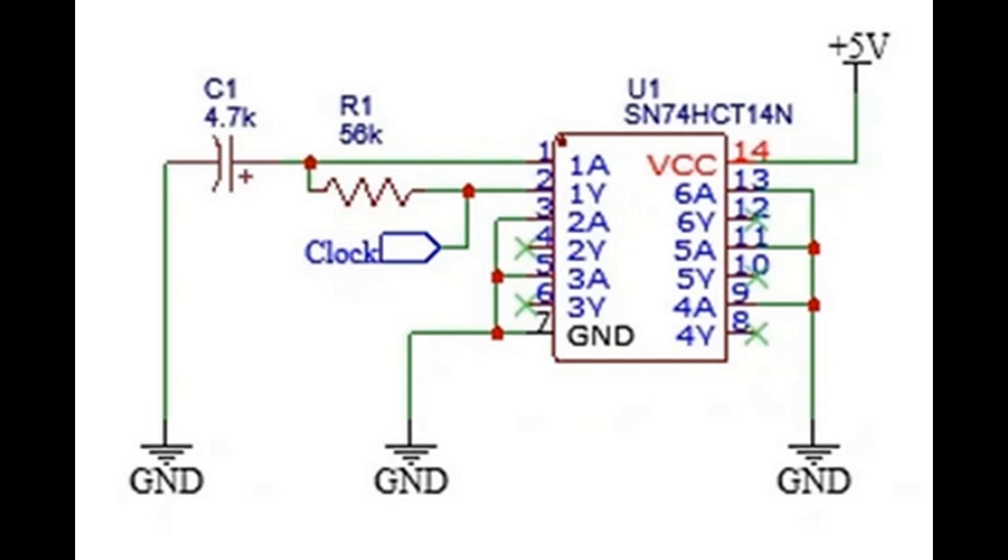Let's look at the schematic. You can see that the capacitor is placed between pin 1, the input of the inverter, and ground. And there's a resistor between pin 2, the output, and pin 1.